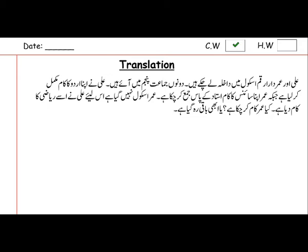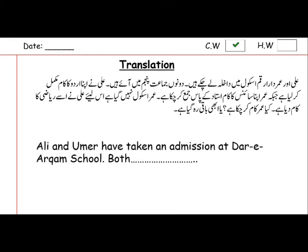All these sentences are given to you. You can identify easily that these are in present perfect tense, so you should translate them using the structure and formulas we have learned before. Let's start translating together. 'Ali and Umar have taken an admission at Dar-e-Arkham school.' 'Ali and Umar Dar-e-Arkham school mein dakhla le chuke hain' — so they have taken it. And then 'is dono jamaat panjum mein aayin' — both have entered in class 5. The rest will be completed by you inshallah.